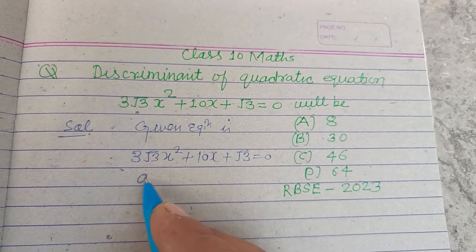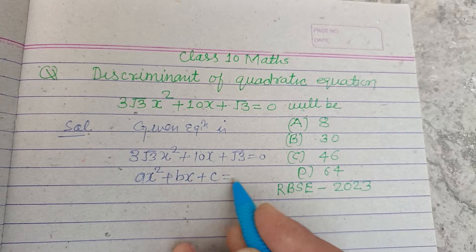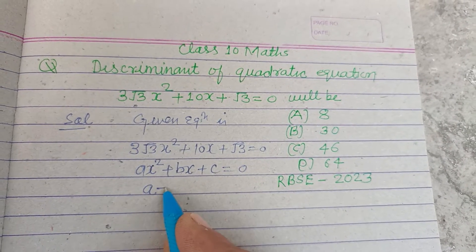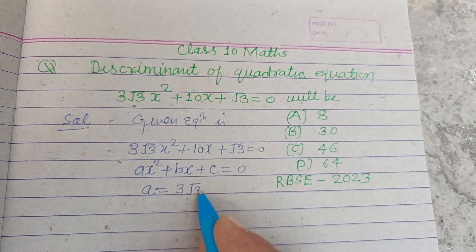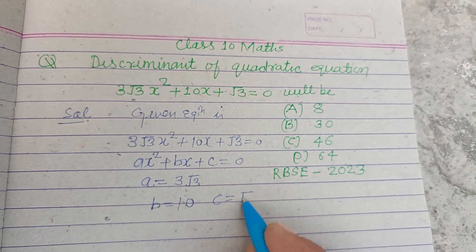Now comparing this with standard form ax² + bx + c = 0, a = 3√3, b = 10, and c = √3.